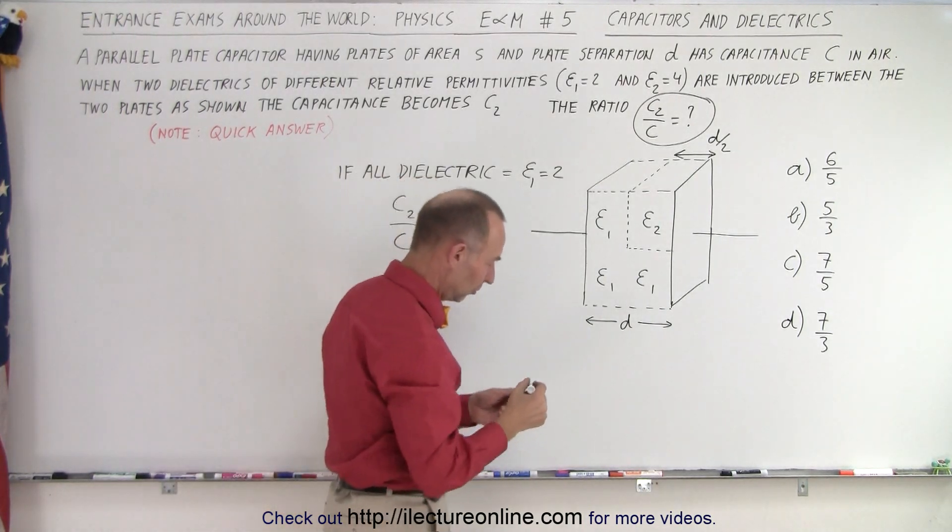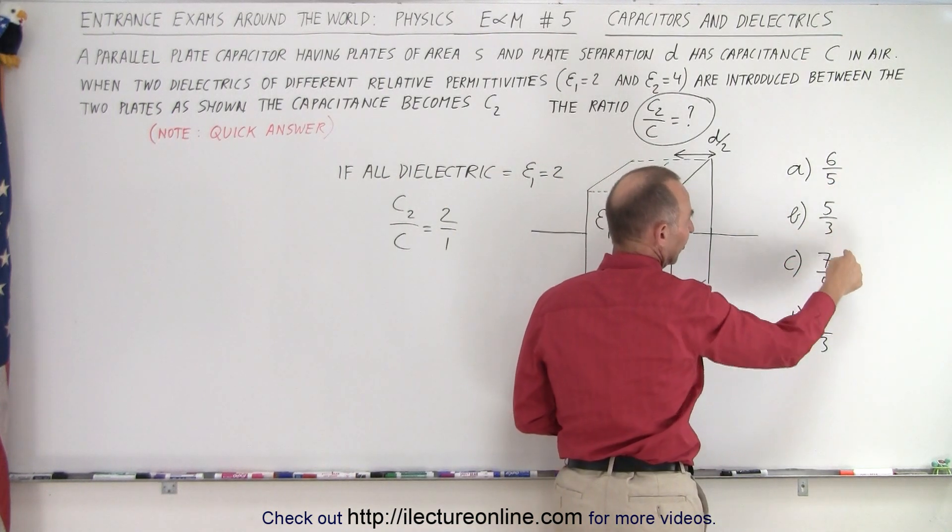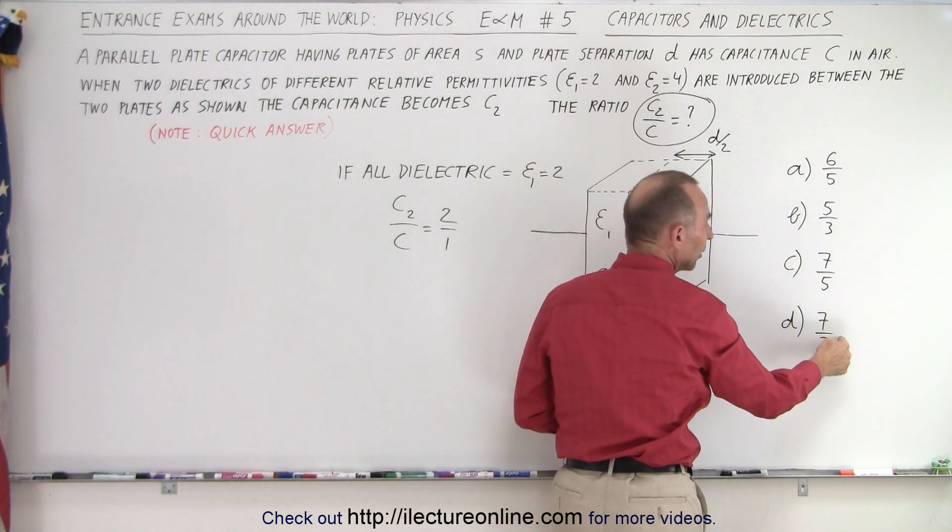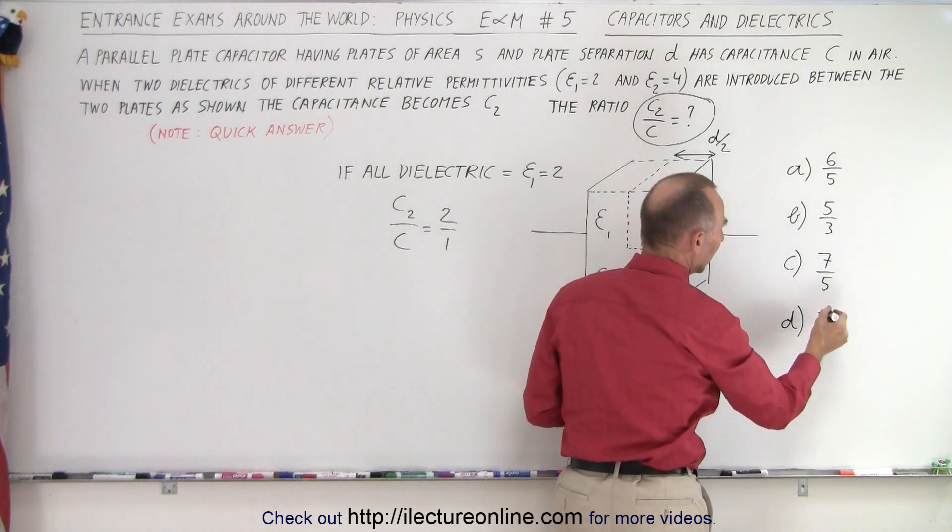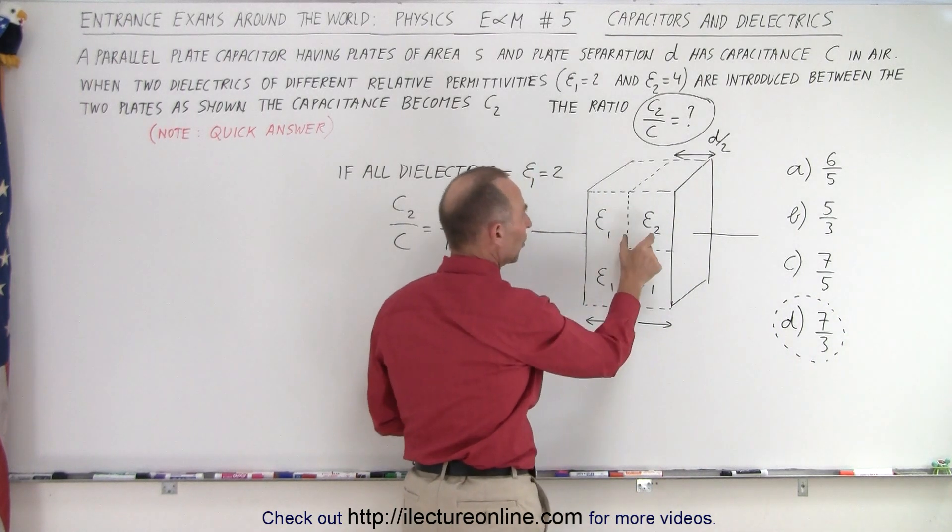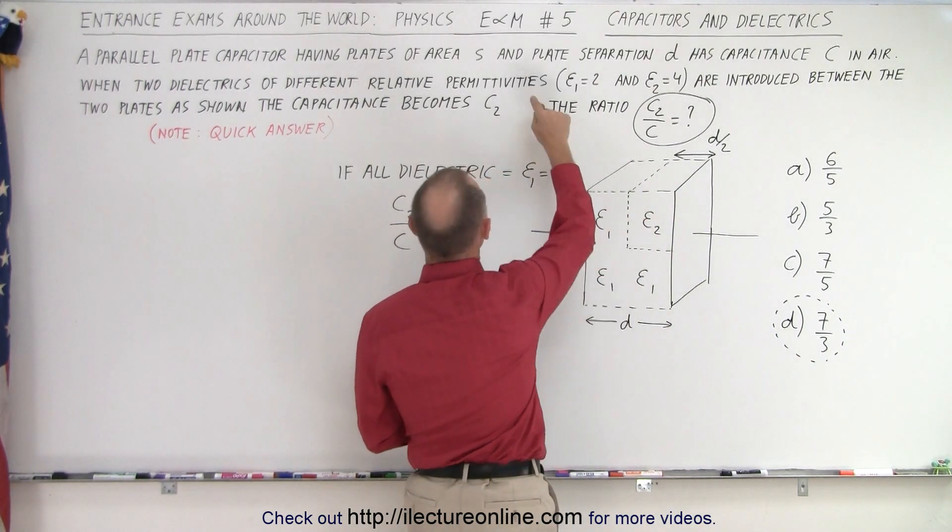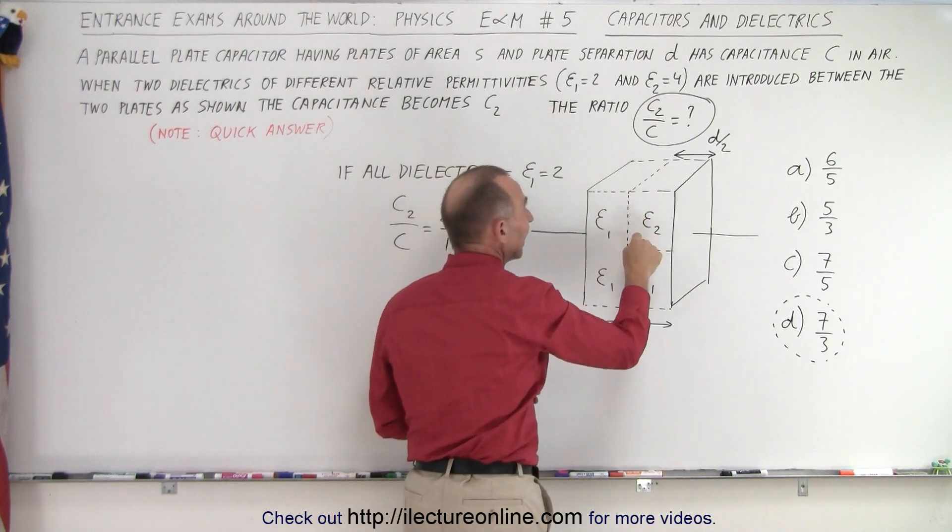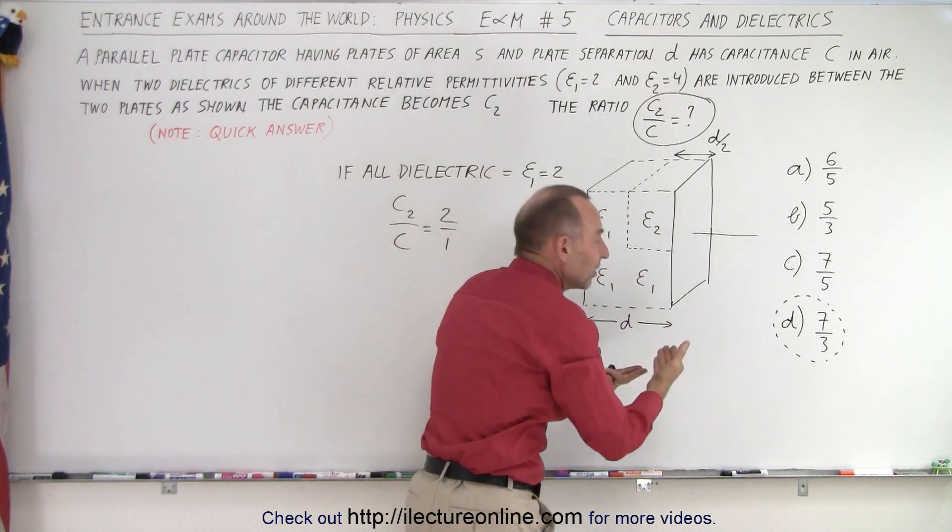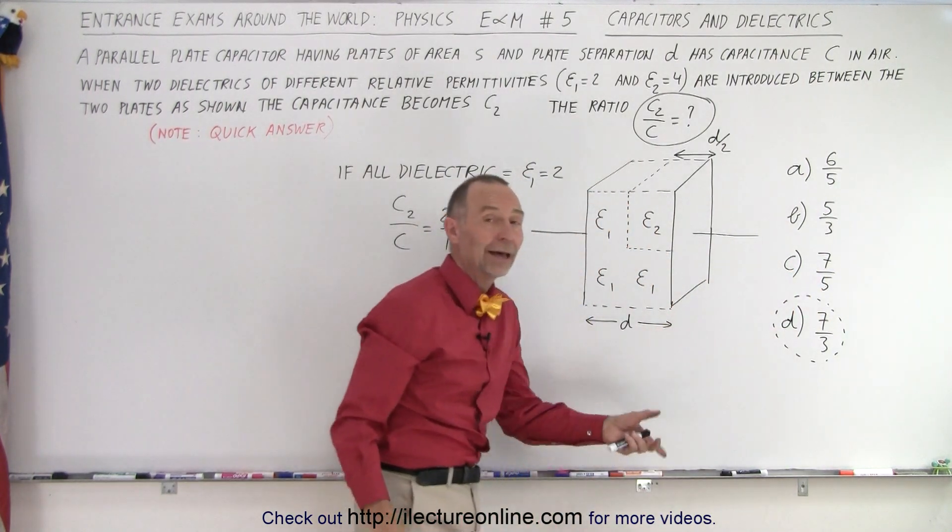Now take a look at the answers. This is less than 2 to 1, this is less than 2 to 1, this is less than 2 to 1, and this is more than 2 to 1. So right away I would say that this is the only plausible answer, because when you take a small section of that and replace it by a dielectric which has even a larger permittivity, then the ratio would be greater than 2 to 1. This is the only possible answer. I would just pick D and move on.